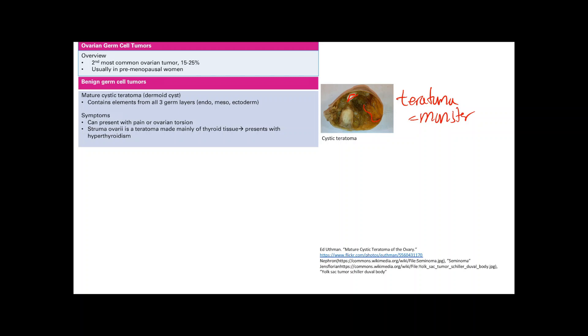The other thing that can happen is struma ovarii. That's when the teratoma is mainly made of thyroid tissue, so you get extra thyroid tissue, extra thyroid hormone, leading to hyperthyroidism.